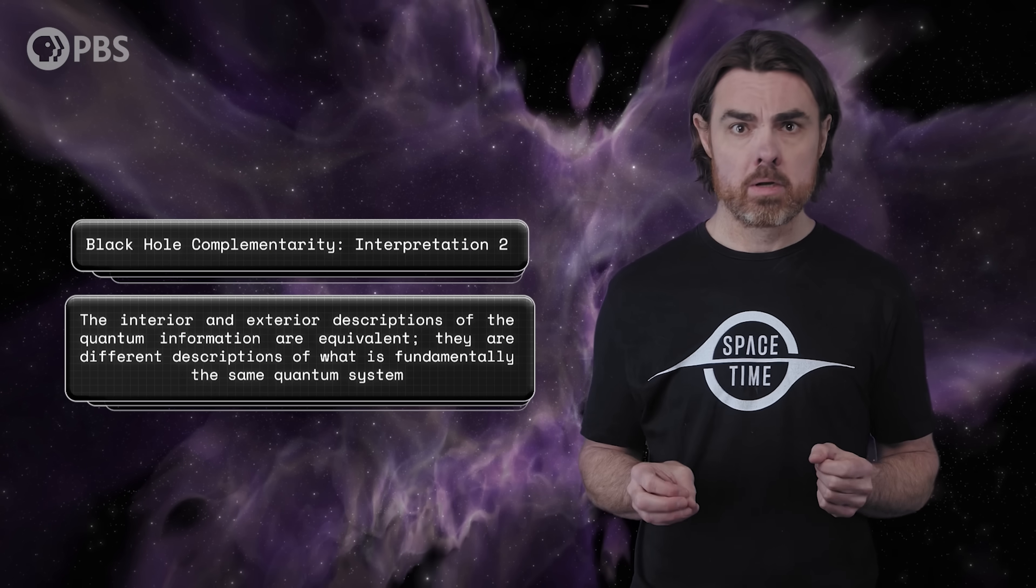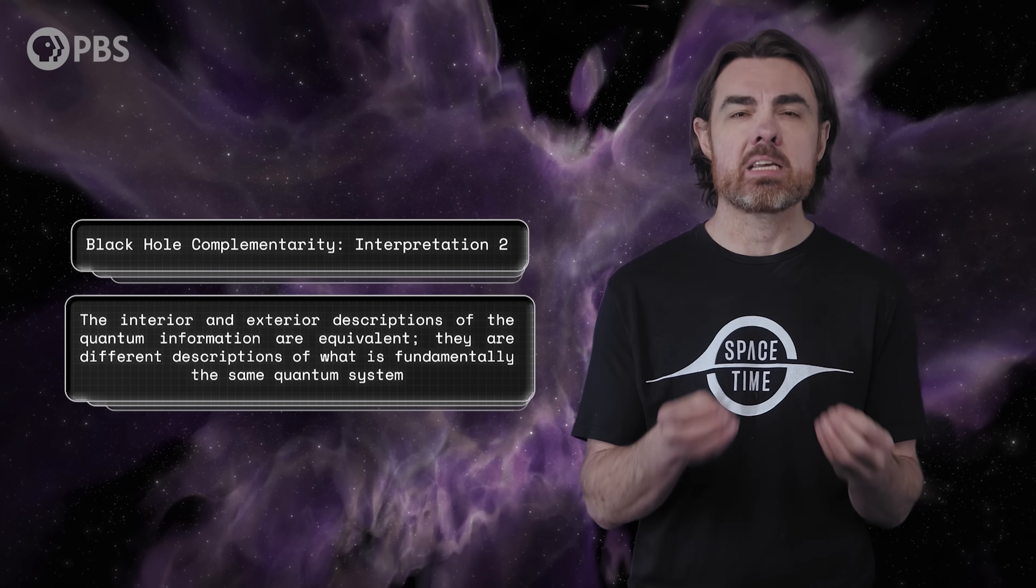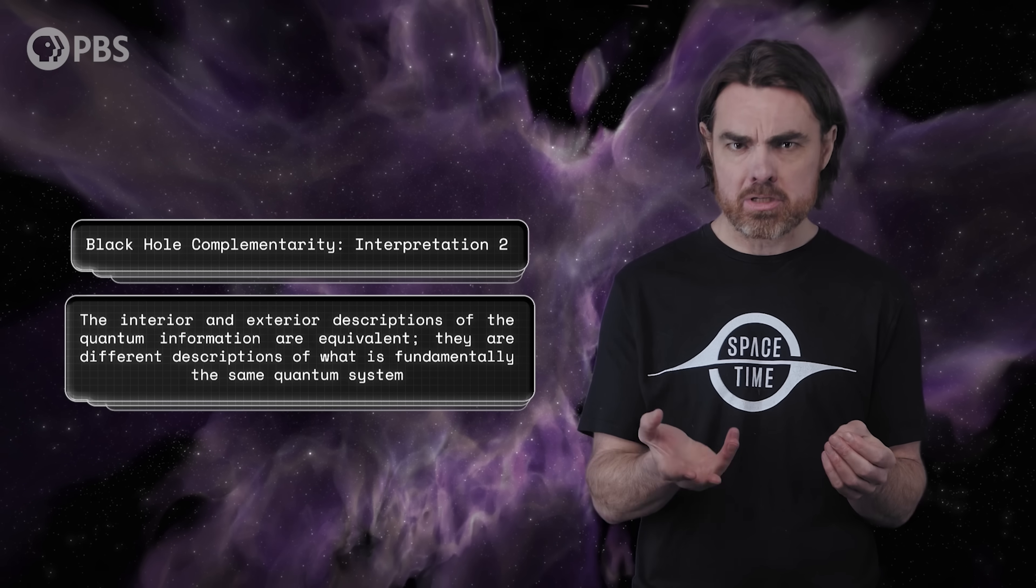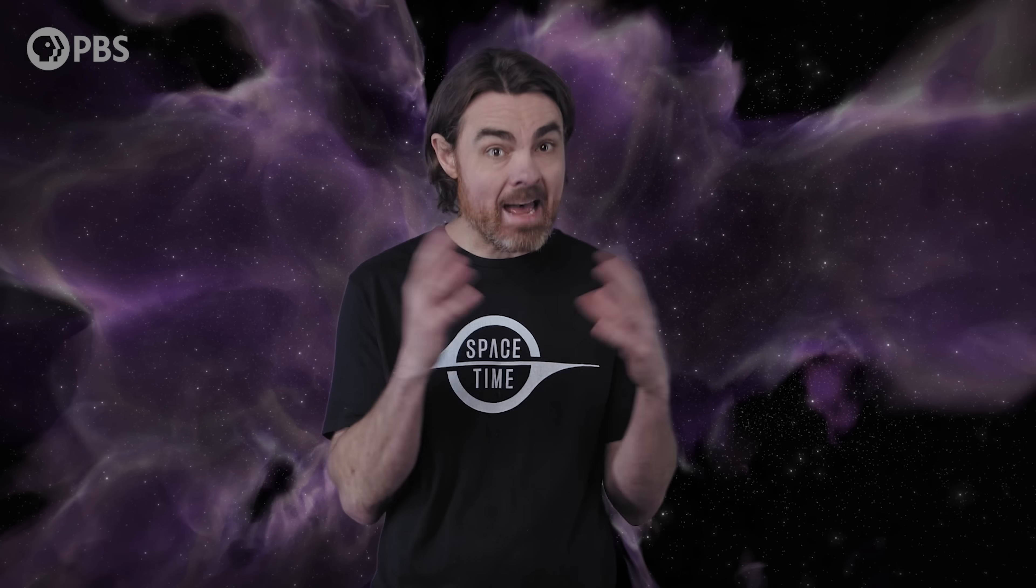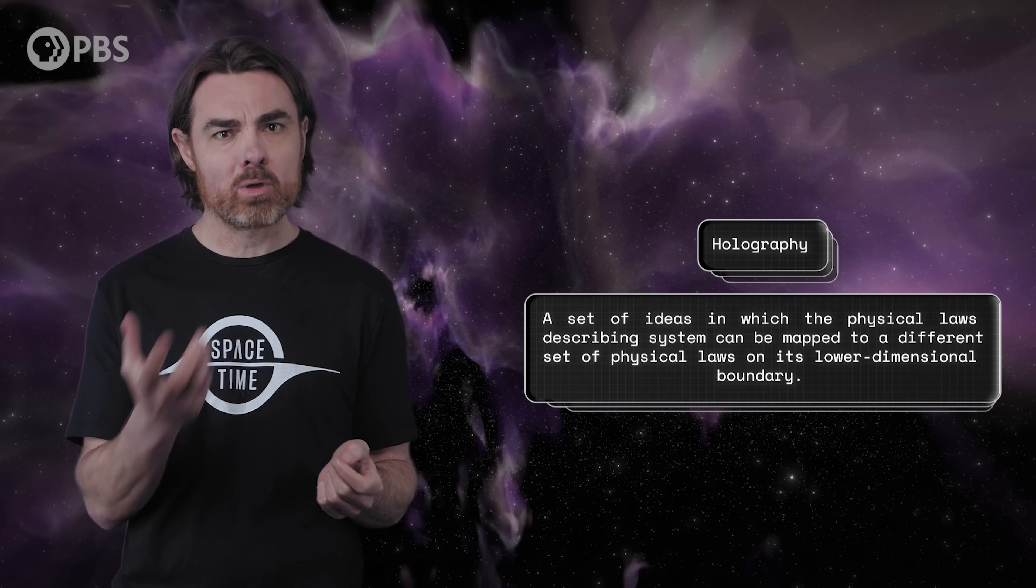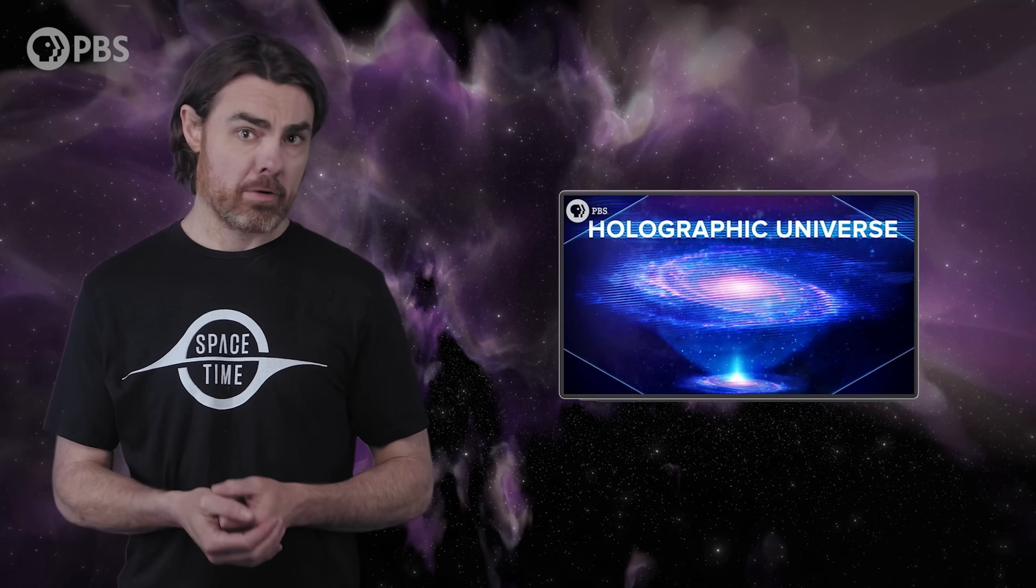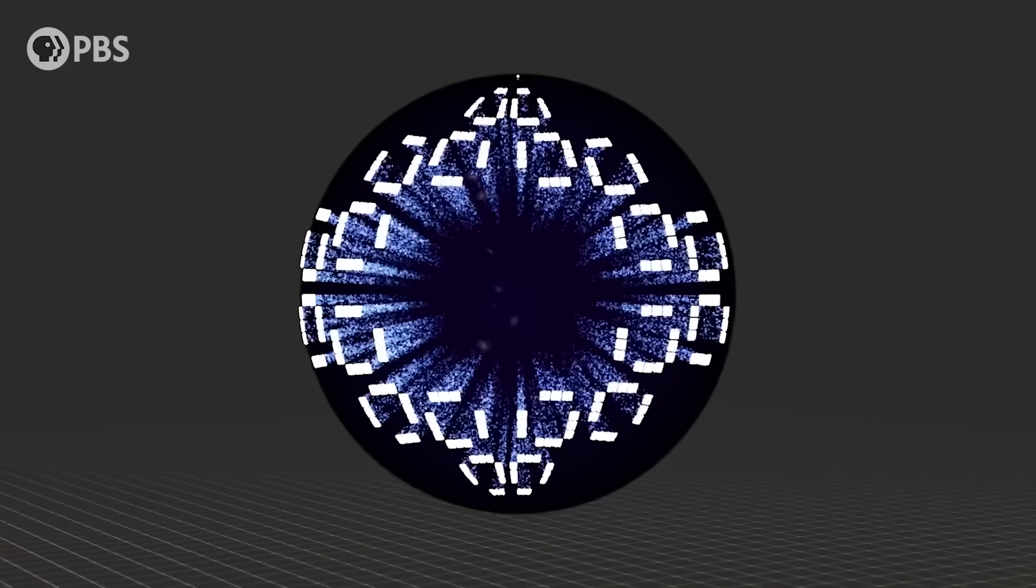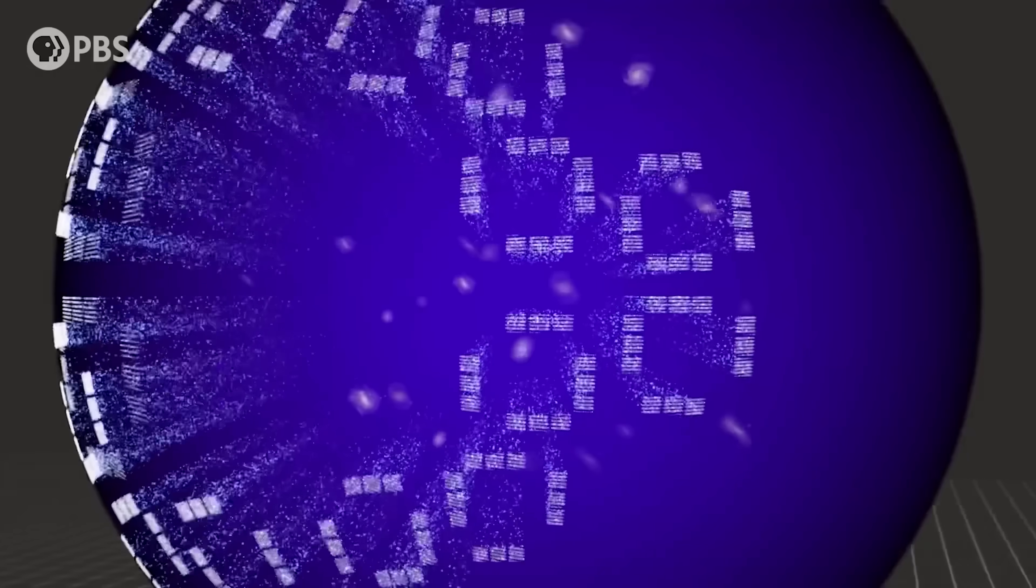Interpretation two for black hole complementarity is that the interior and exterior descriptions of the quantum information are in a sense equivalent. Or rather, they are different descriptions of what is fundamentally the one quantum system. There's no duplication because the interior and exterior of the black hole are just different descriptions of some abstract larger quantum system. And this is a form of holography, in which a lower dimensional system can be equally well described as a system one dimension higher. A boundary and its interior become different ways to talk about the same thing. It's an idea that can be extended well beyond black holes, even suggesting that the interior of our universe may have a dual and complementary description on its infinitely distant surface.